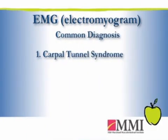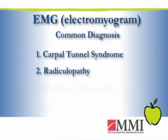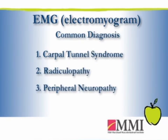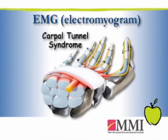Common diagnoses would include carpal tunnel syndrome, radiculopathy, peripheral neuropathy, and cubital tunnel syndrome. For example, carpal tunnel syndrome is a condition where the nerve that goes through the wrist — the median nerve — gets pinched at the wrist, and this causes both pain, numbness, and tingling in half of the hand.